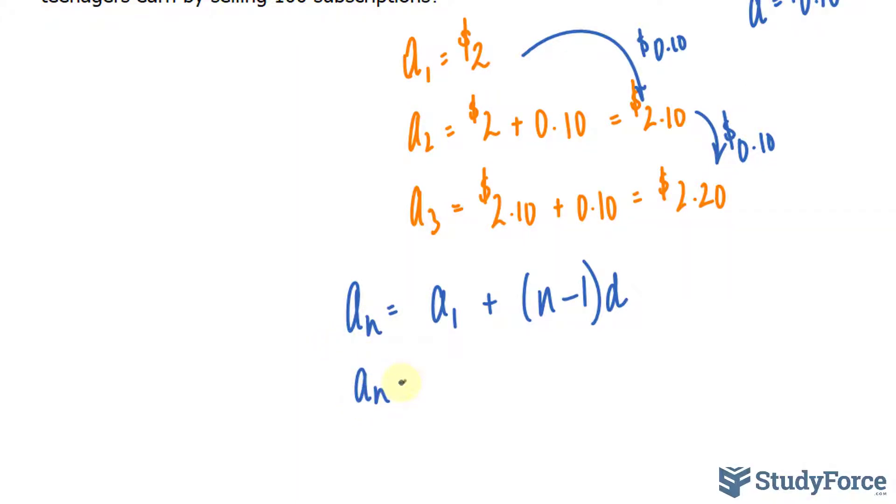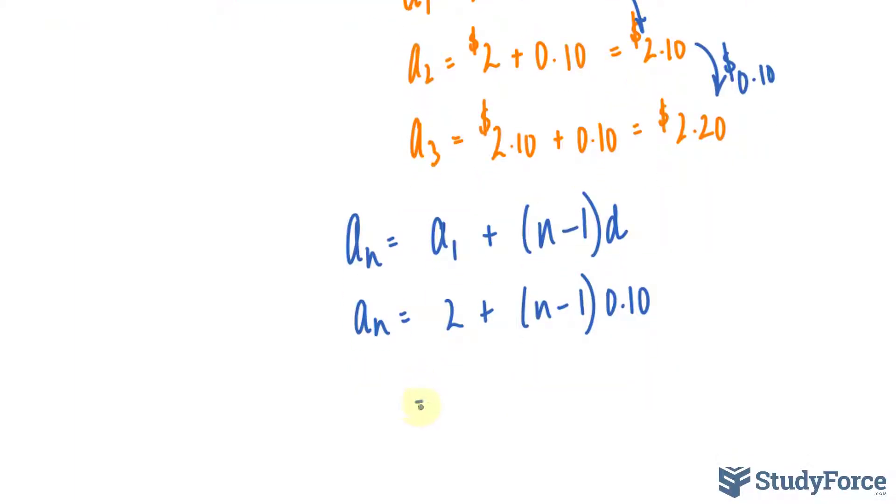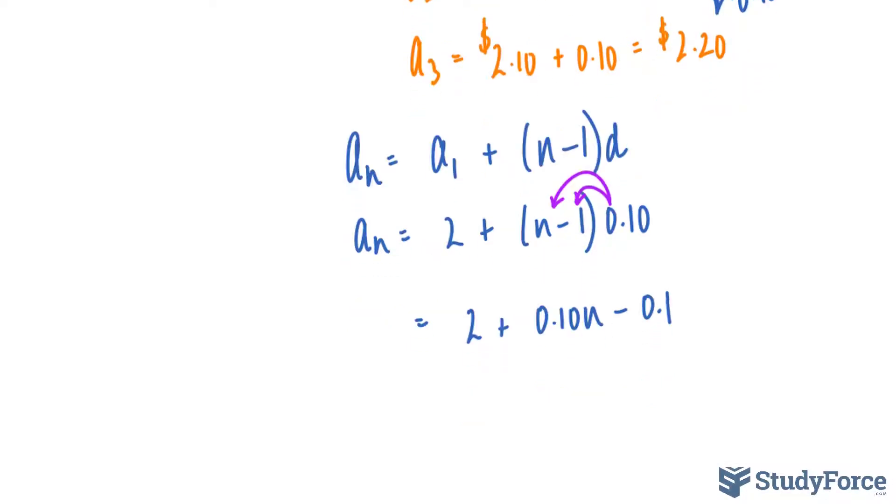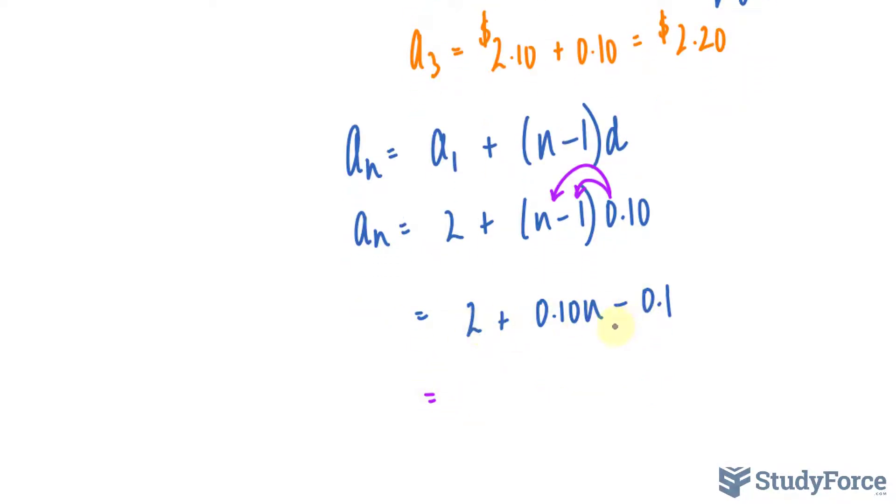A sub n is equal to 2 plus n minus 1 times the common difference of 0.10. We can simplify this, and if you do simplify it correctly, 2 plus 0.10n, you should end up with a linear equation, minus 0.10. Notice that I multiplied this number into the parentheses. 2 minus 0.1 is 1.9 plus 0.10n.